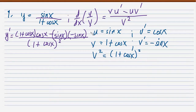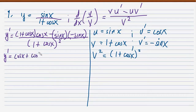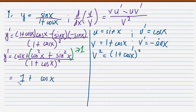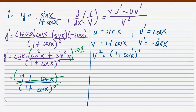Distributing cosine in the numerator gives cosine x plus cosine squared x, and negative times negative gives positive sine squared x. So the numerator becomes cosine x plus cosine squared x plus sine squared x. Since cosine squared x plus sine squared x equals 1, the numerator simplifies to 1 plus cosine x. In the denominator we have (1 plus cosine x) squared, so the (1 plus cosine x) cancels, giving a final answer of 1 over (1 plus cosine x).